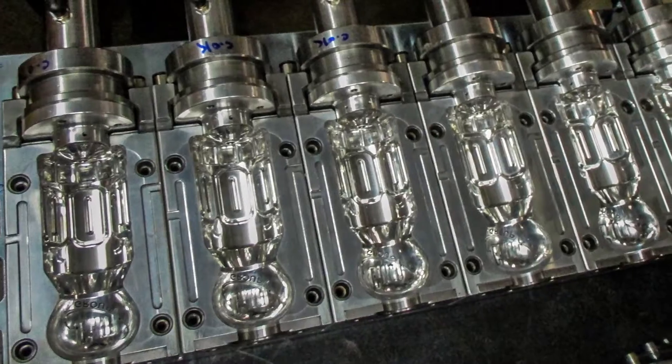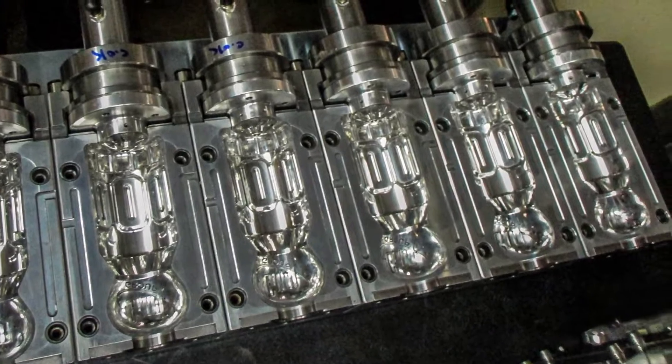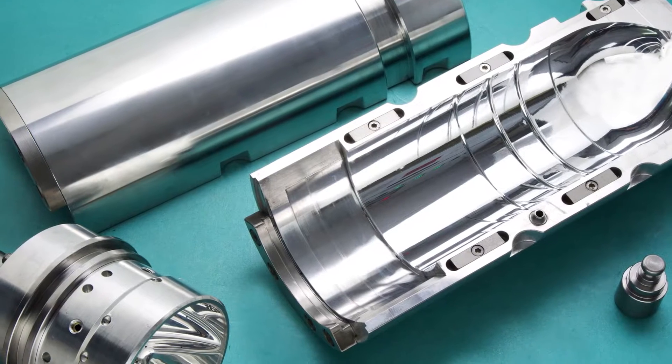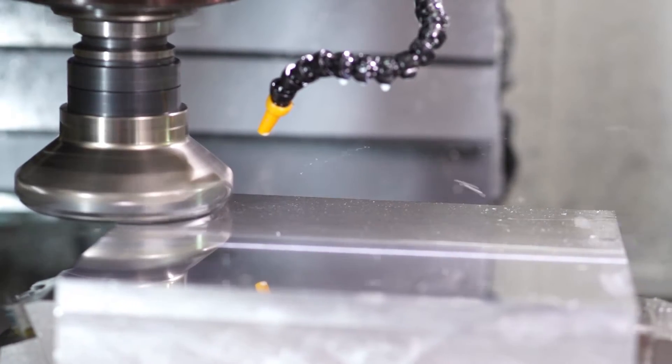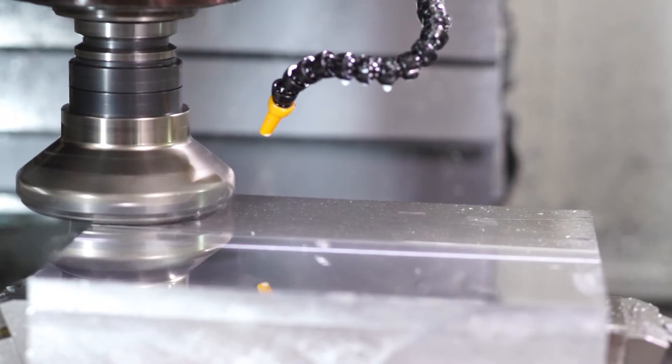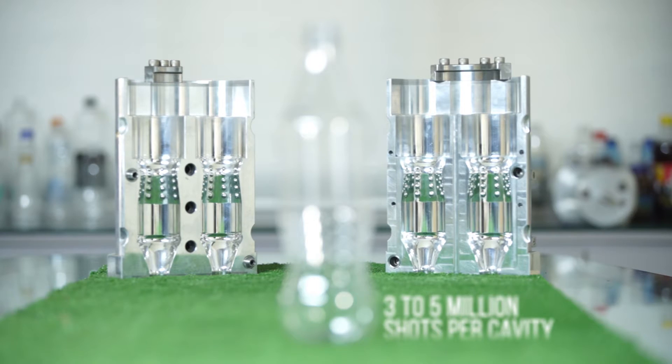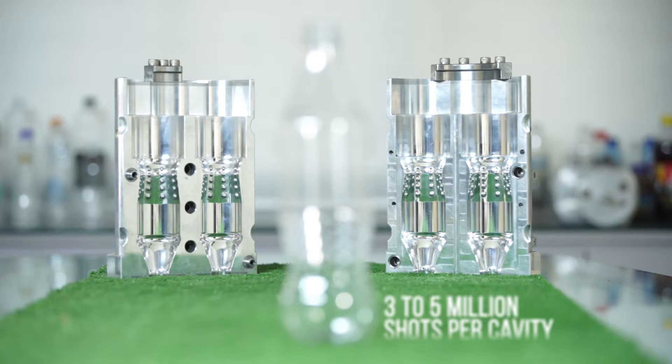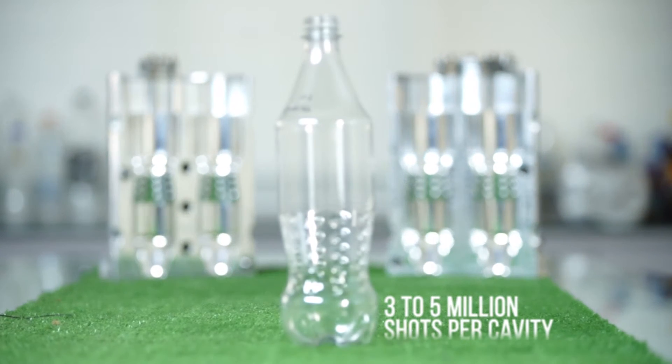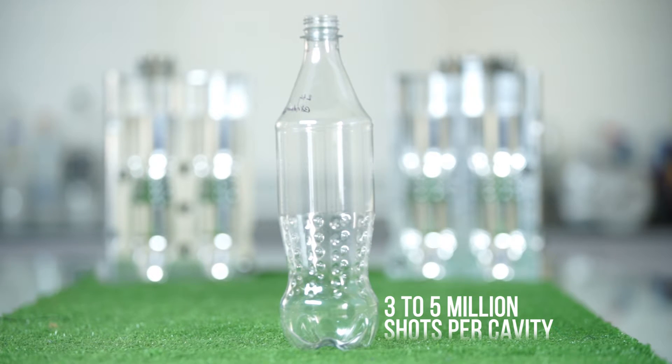We manufacture blow molds for linear machines as well as rotary machines. Made in high-grade aluminum alloy with diamond polishing and surface coating, our molds produce PET bottles of uncompromising quality. With regular and appropriate maintenance, they are capable of producing 3 to 5 million shards per cavity.